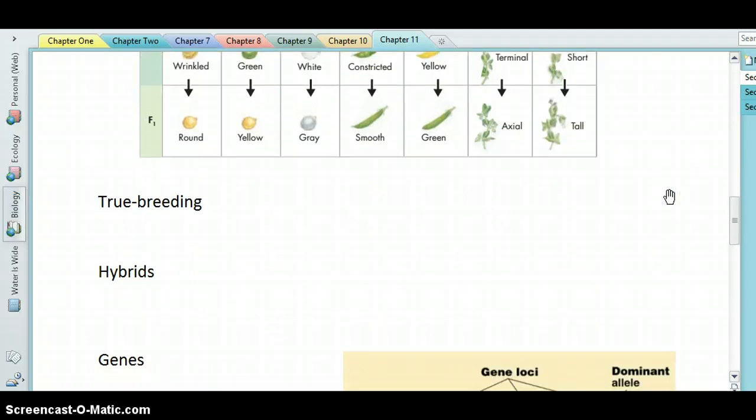He started with what we would call true breeding plants. And so, for example, if he had a batch of purple plants and a batch of white-flowered plants, if he were just pollinating amongst all the purple plants, every generation after that they would be purple, and the same with the whites, they would be white.